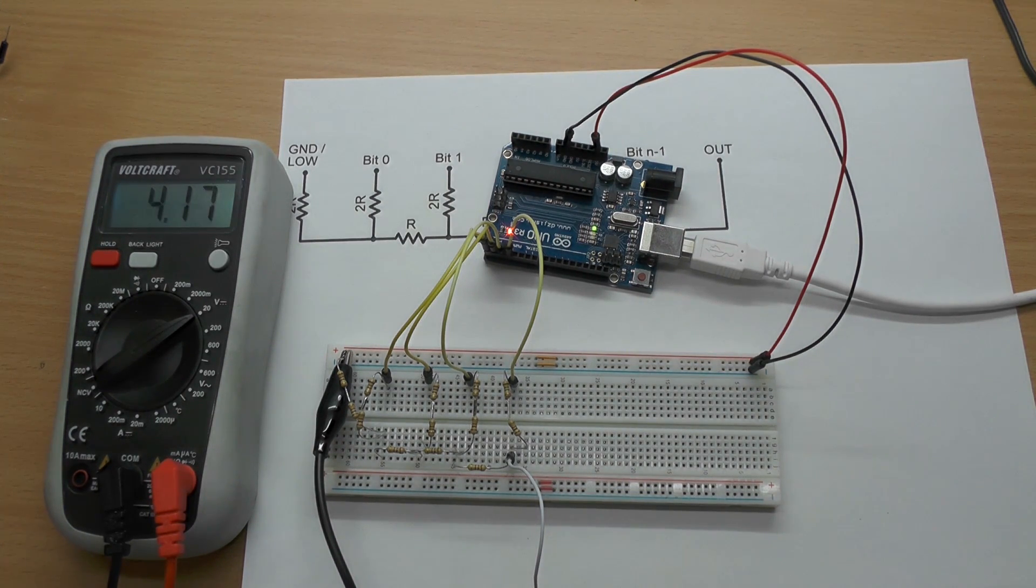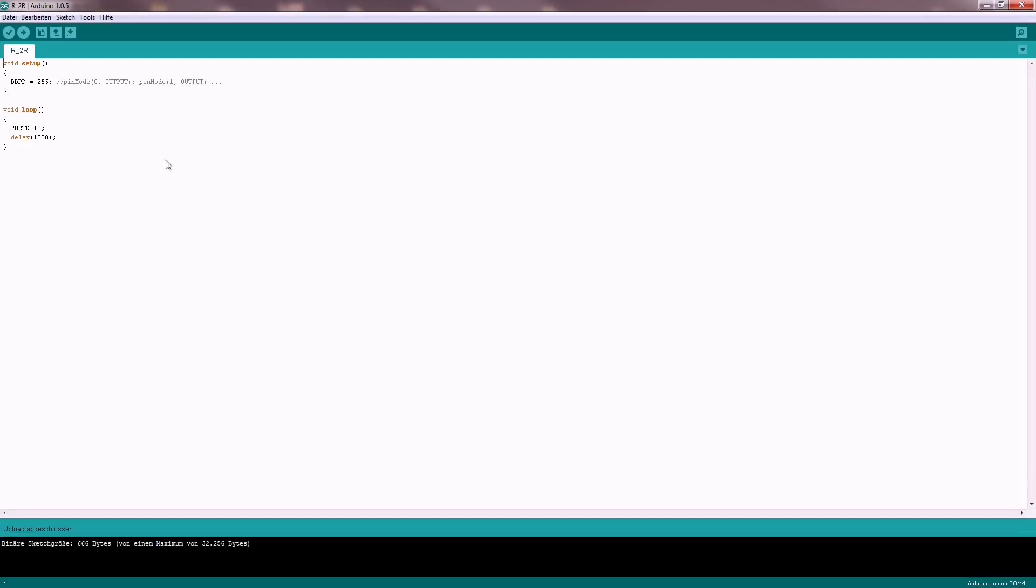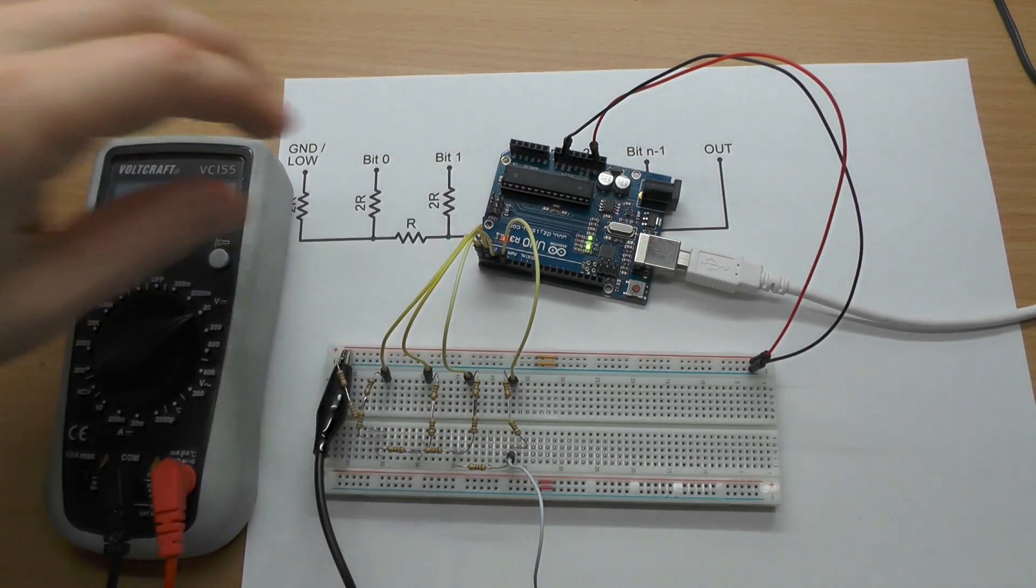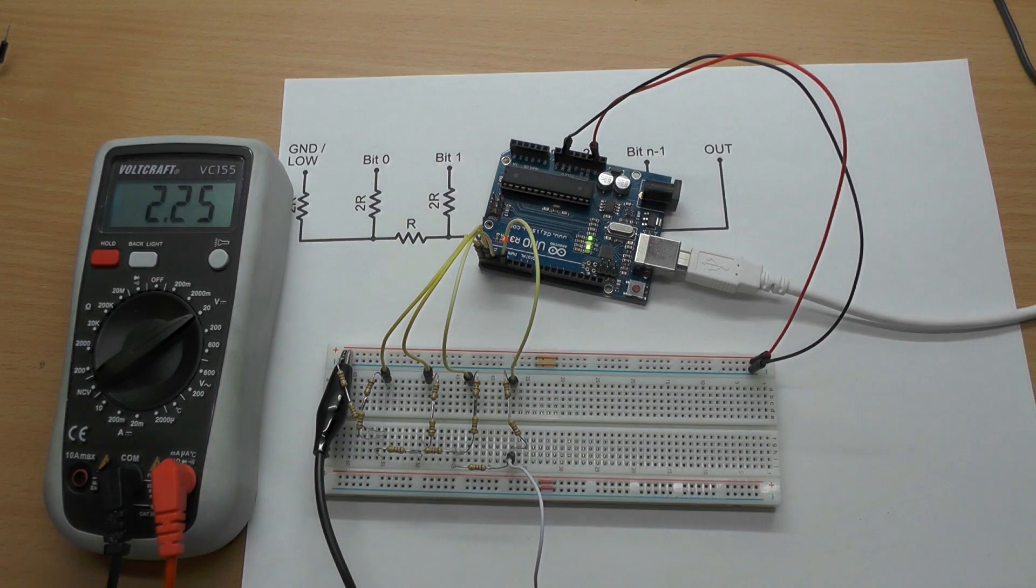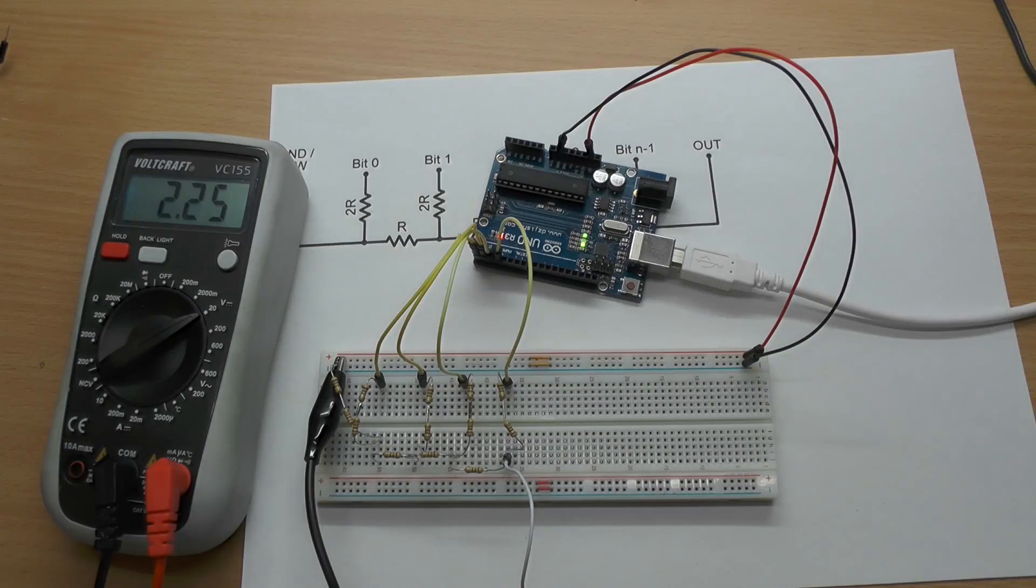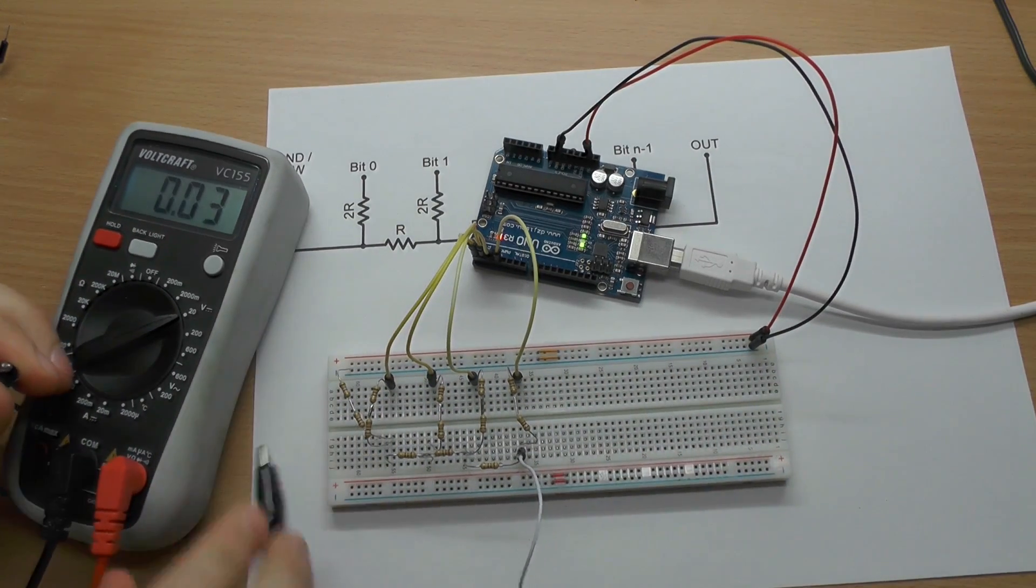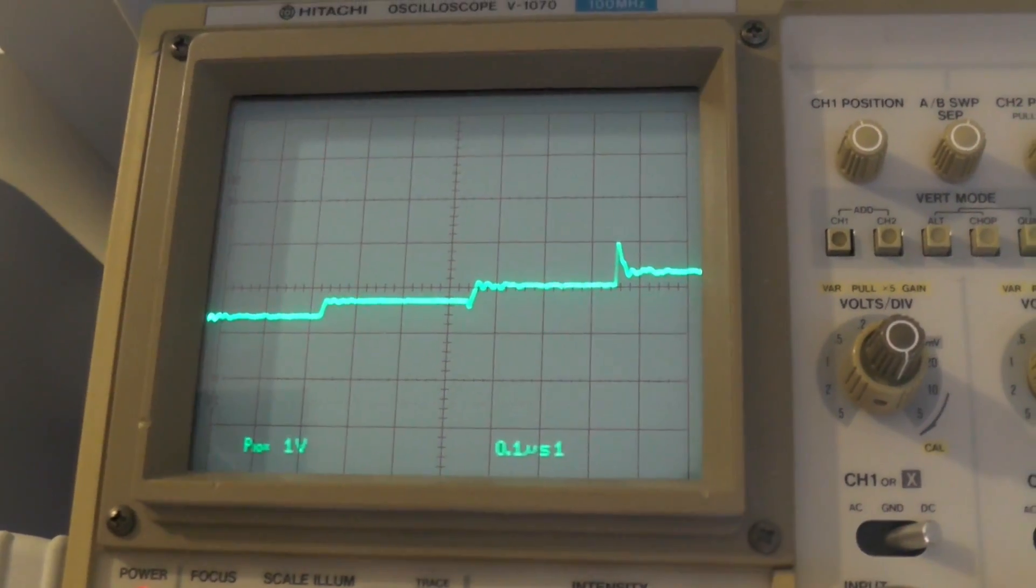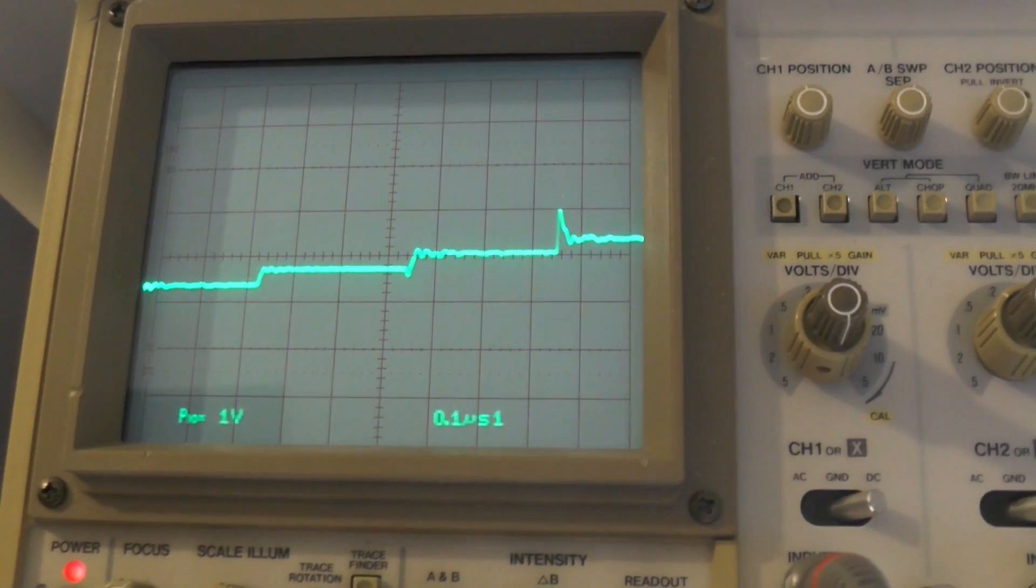Let's remove the delay to get the maximum frequency there. We want to enjoy how fast this thing is working. To avoid the loop overhead I just wrap it by an endless loop. Okay, our voltmeter just shows an average value. It's not fast enough. So let's connect the oscilloscope and check what we get. One level change every 300 nanoseconds. That's insane.